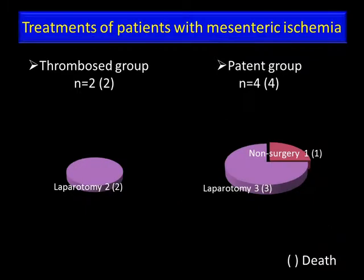This slide shows the treatment of patients with mesenteric ischemia. In the thrombosed group, two had mesenteric ischemia, and both patients died during hospitalization. In the patent group, four had mesenteric ischemia. A laparotomy was done in three. However, all four patients with mesenteric ischemia died during hospitalization.